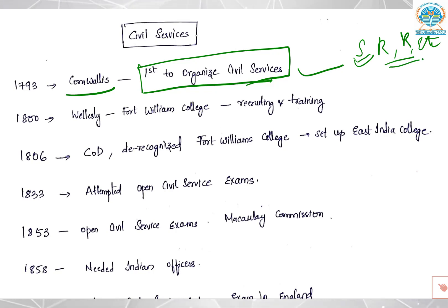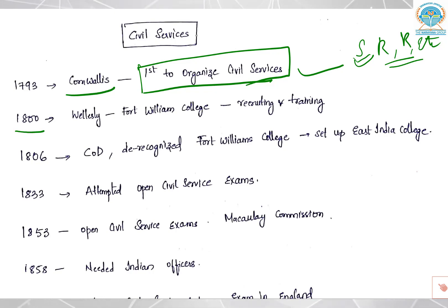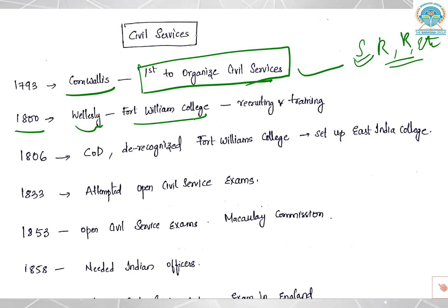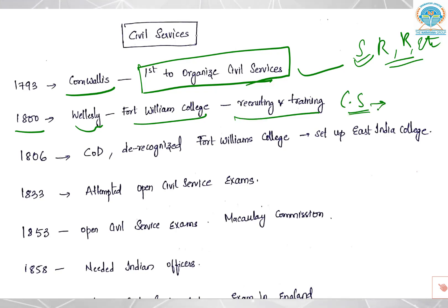He also made stricter rules and regulations. In 1800, Wellesley set up Fort William College for recruiting and training civil servants. This was also for better administration of bureaucrats.